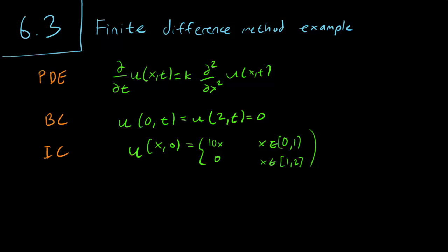Hello class, this is section 6.3 and in this video we are going to work through an example using the finite difference method. We have a heat equation in one dimension with a rod of length 2 with homogeneous Dirichlet boundary conditions on both sides and with this initial condition. So our initial condition is that the rod heats up from 0 to about 10 to the middle of the rod and then it becomes 0 again in the middle. That's the starting temperature profile of the rod.